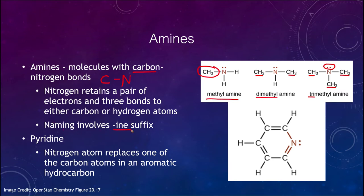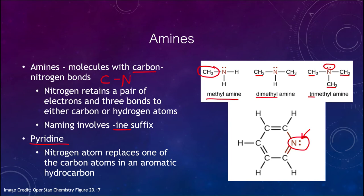The naming will give an -ine suffix. For example, we have pyridine, which is one of the ring structures we've looked at previously. In this case, we have replaced a carbon with a nitrogen. The number of bonds is still the same — we have a single bond here and a double bond to this carbon, and the nitrogen keeps its two electrons. So it has those two extra electrons and is allowed to bond three times: once to one carbon atom, and twice to the second carbon atom. The nitrogen atom has replaced one of the carbon atoms in that aromatic hydrocarbon, and we see that ring structure of carbon atoms bonding together with single and double bonds.